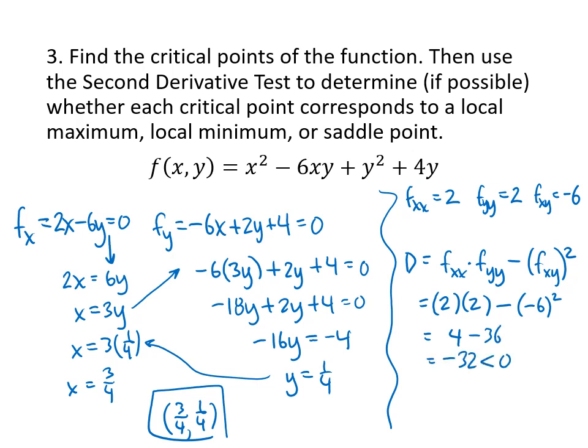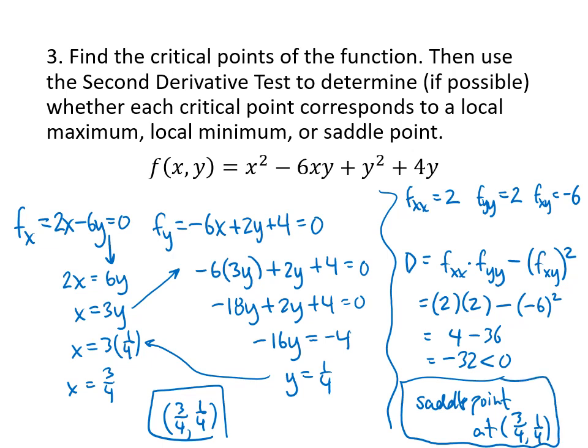When we look at the different possibilities for the second derivative test, remember that D — which stands for determinant — determines whether we have a max or a min. Because D turned out to be negative, that means we don't have a max or a min; what we have here is a saddle point at (3/4, 1/4). That's our final conclusion for this problem.